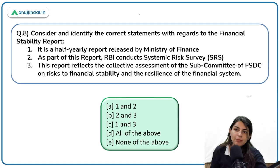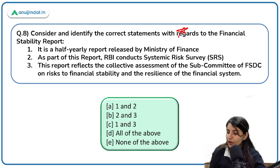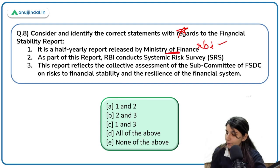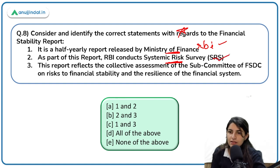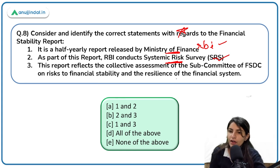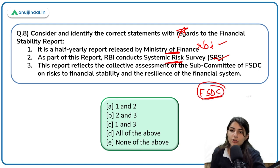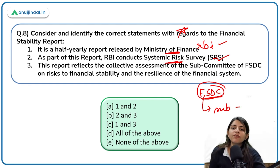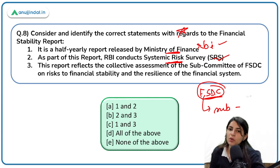The next question is about the Financial Stability Report — a very important report from your exam perspective, expect one question from here. It is a half-yearly report released by RBI, not the Ministry of Finance. As part of the report, RBI conducts a systemic risk survey — correct. This report reflects the collective assessment of the subcommittee of FSDC on risks to financial stability and resilience of the financial system — correct. FSDC is chaired by the Minister of Finance, but its subcommittee is chaired by the RBI Governor.